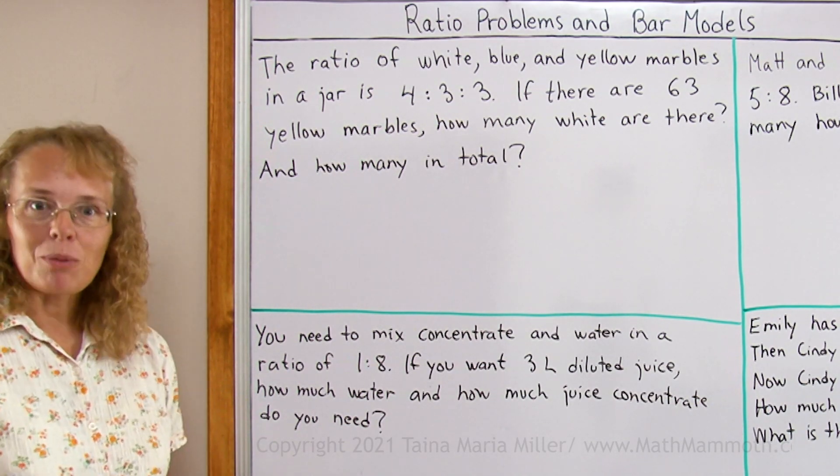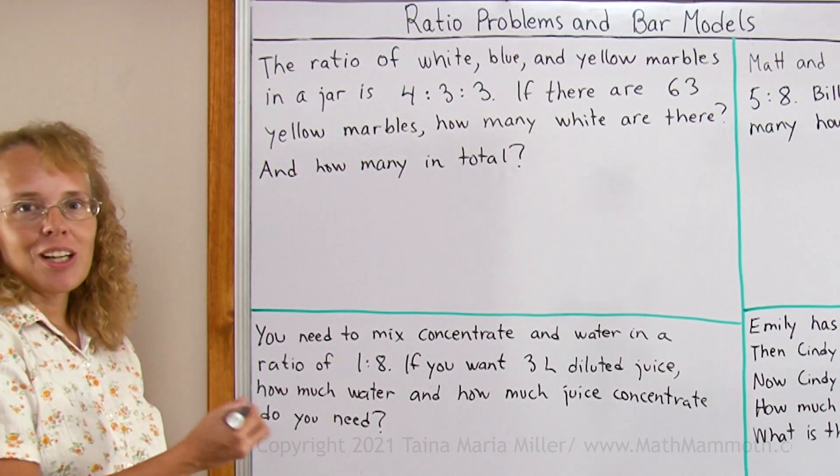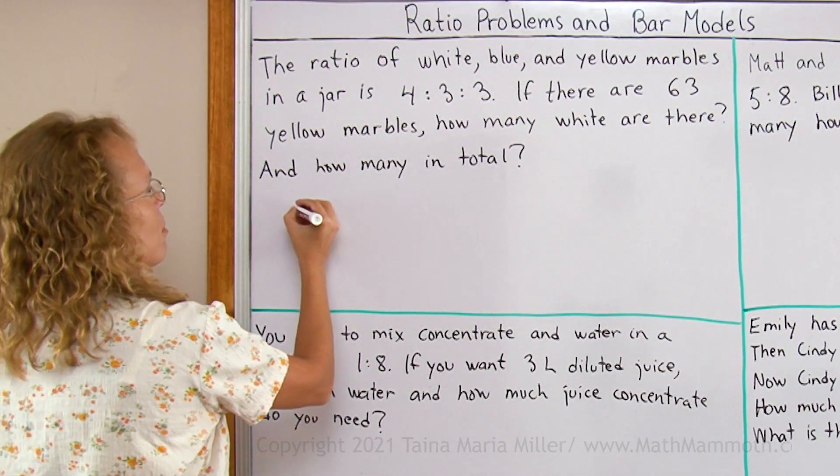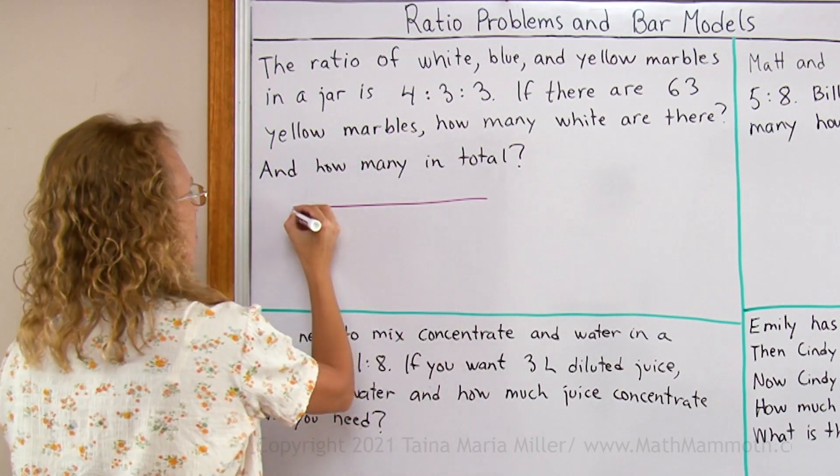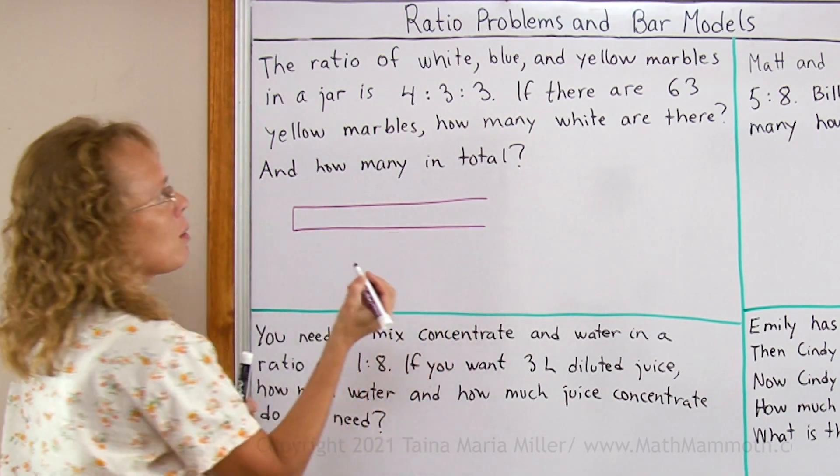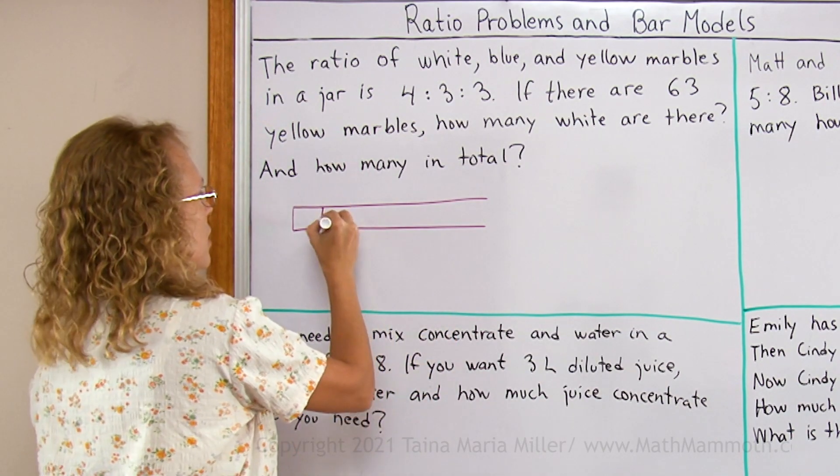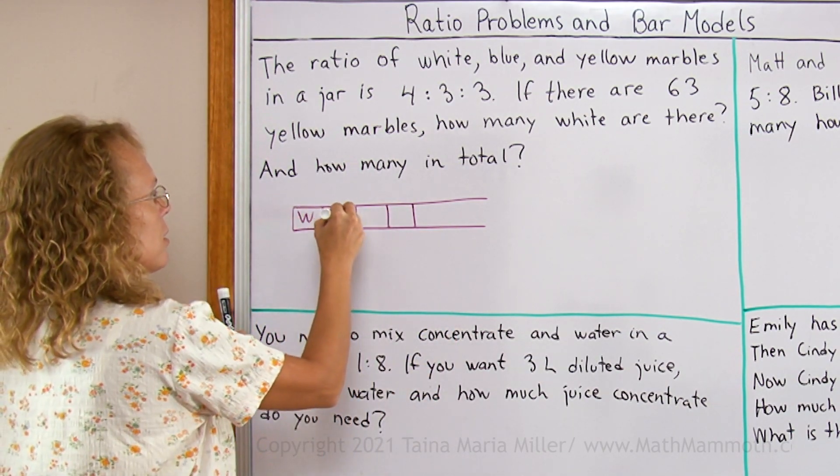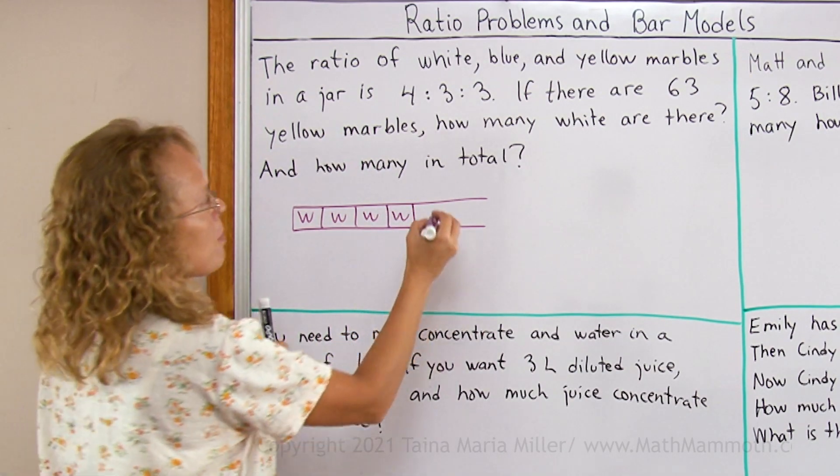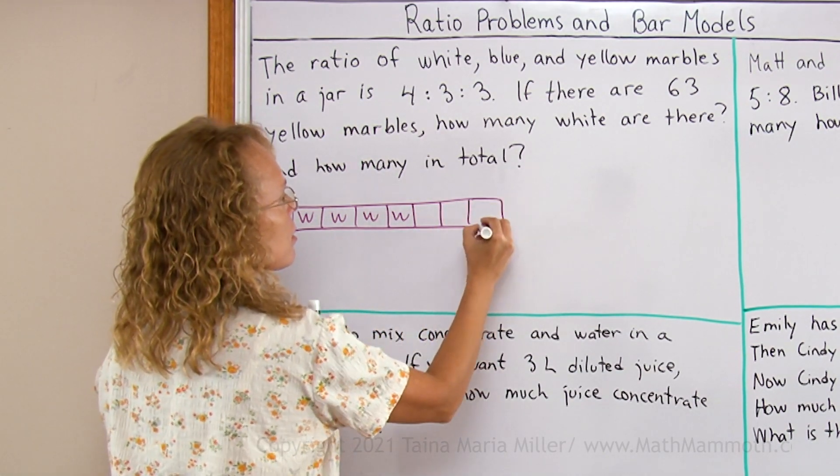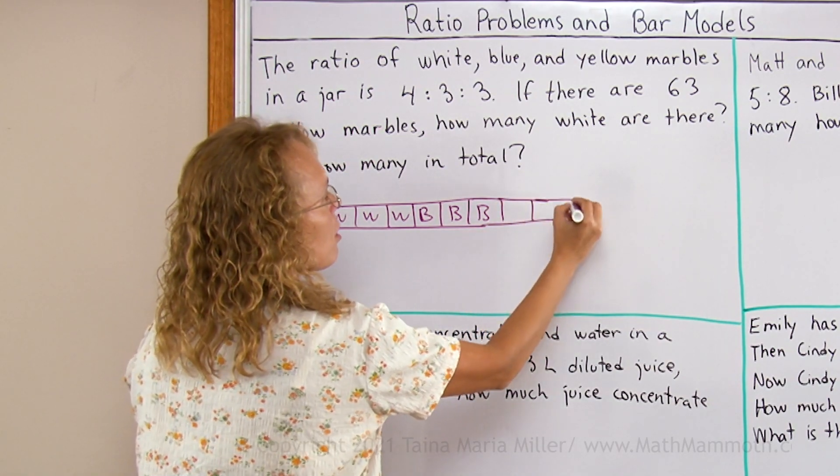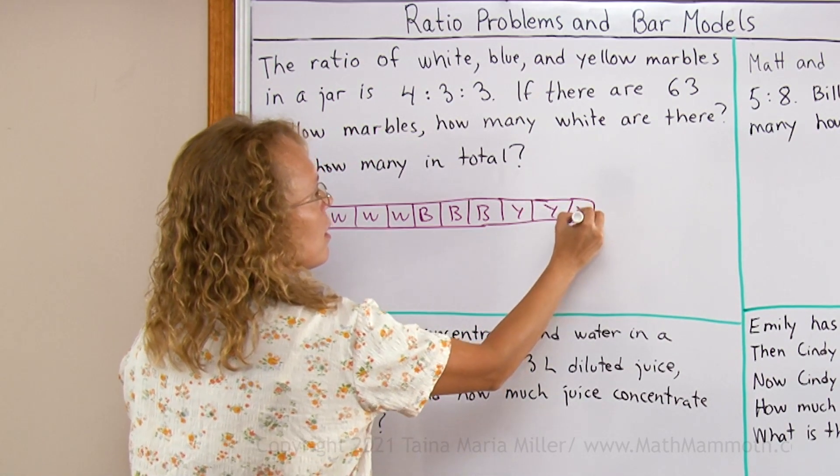This is a very easy problem when we draw our model here. I basically want to have a long bar to represent the total and in this total I want to have four parts for the white marbles. So four blocks like that and these are the white ones, and then three parts for the blue marbles and then three parts for the yellow ones.